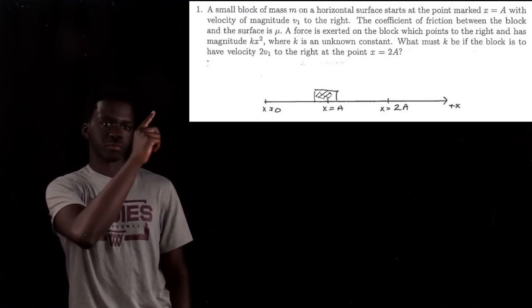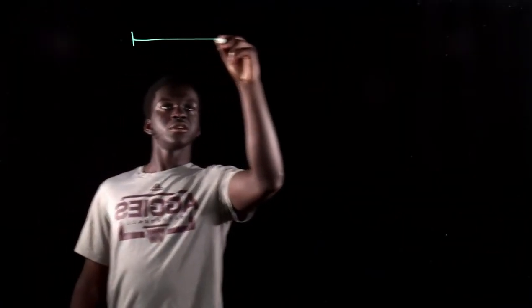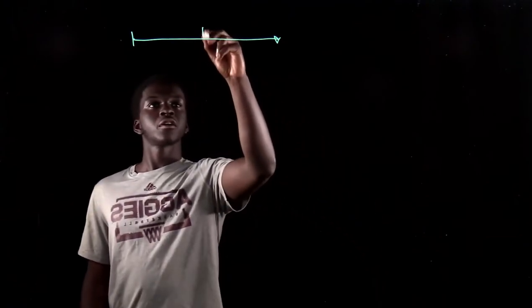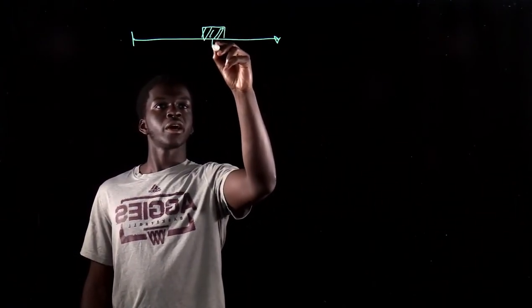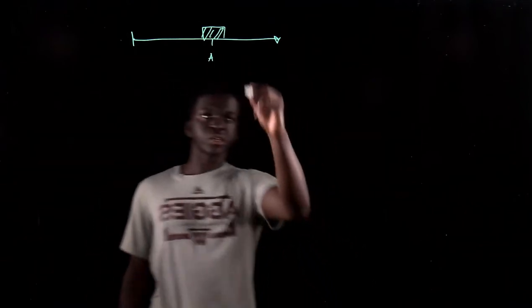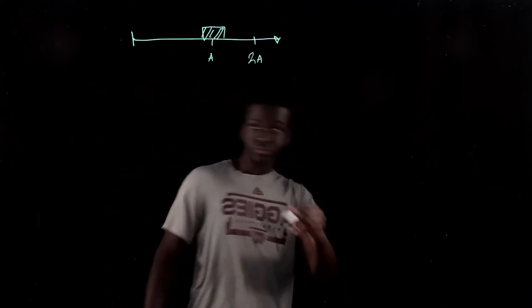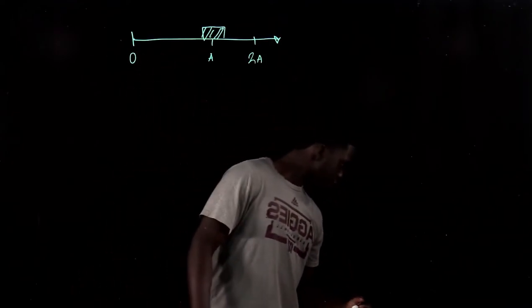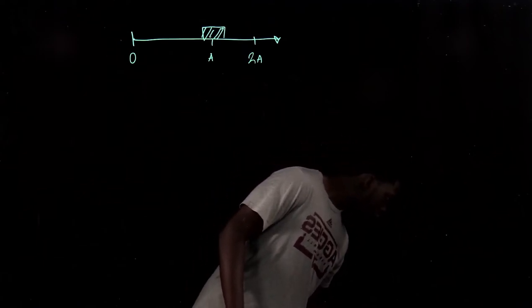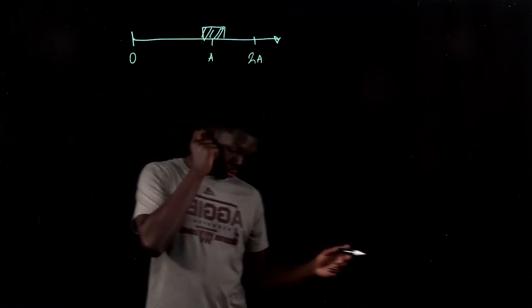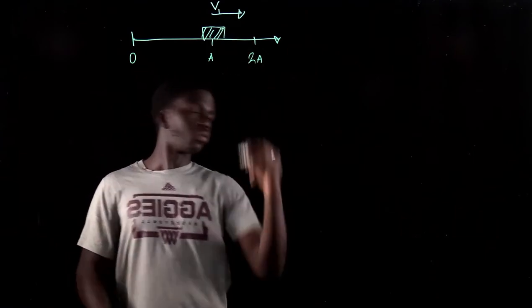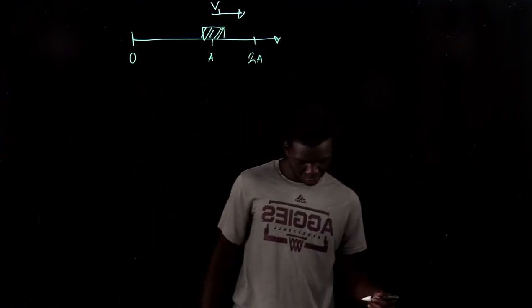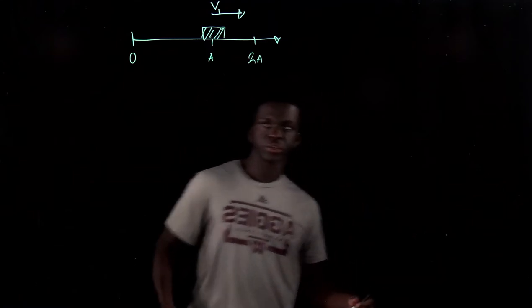Let's get started with question one. The question is going to appear right here, so take a picture, look at it, and I'm going to get straight into solving the problem. We have a platform and a block at position a, and we're trying to figure out the state at 2a. The question is asking: what must k be if the block is to have velocity 2v1 to the right at x equals 2a?